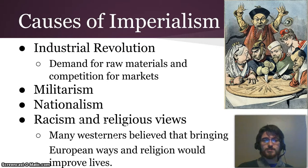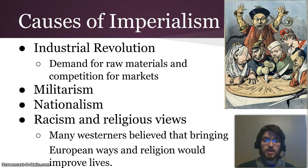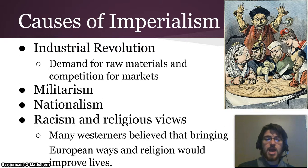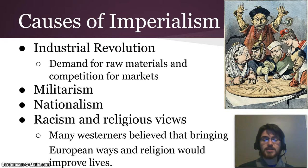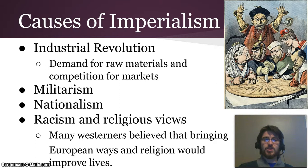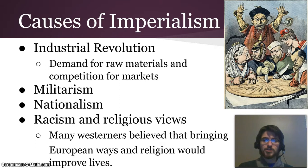So let's talk about the causes of imperialism. The Industrial Revolution caused this demand for raw materials — more cotton, more coal, more iron, more food, and lots of other things. That demand for raw materials led European nations to seek those raw materials elsewhere. And the competition for markets was when those European nations had stuff to sell and needed to make money selling those things, so they found places to sell that stuff.